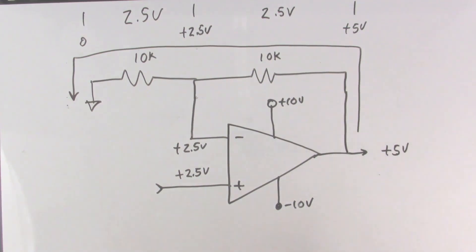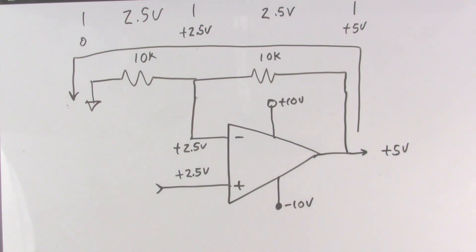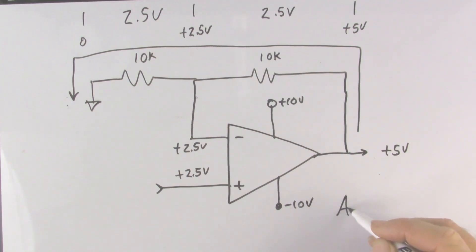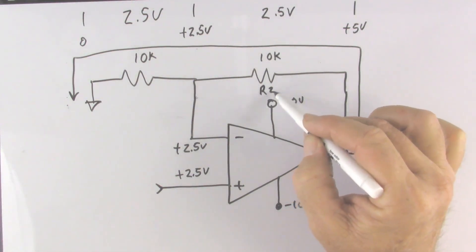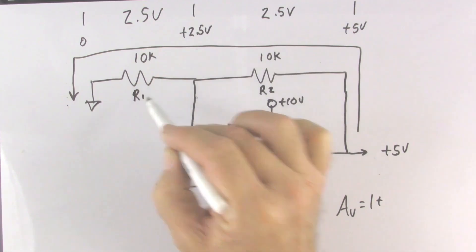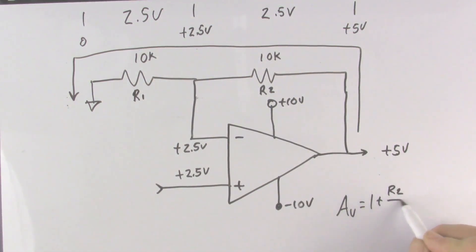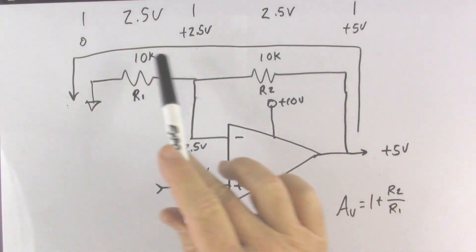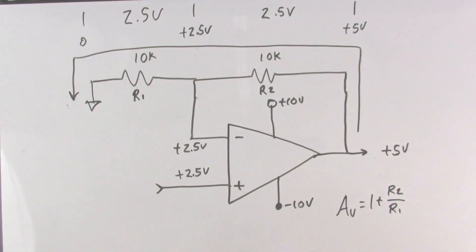So we now have a gain of 2 — we put 2.5 volts in and we get 5 volts out. The formula for this circuit is: voltage gain equals 1 plus R2 divided by R1. So we take the ratio of these two resistors and add 1 to get the gain. With a 1-to-1 ratio, 1 plus 1 gives us a gain of 2.